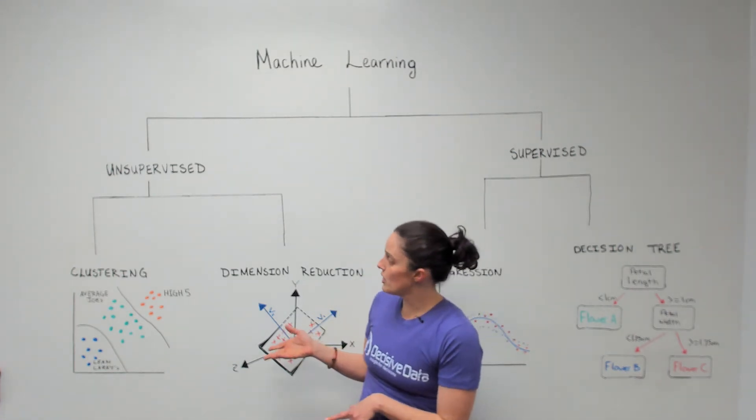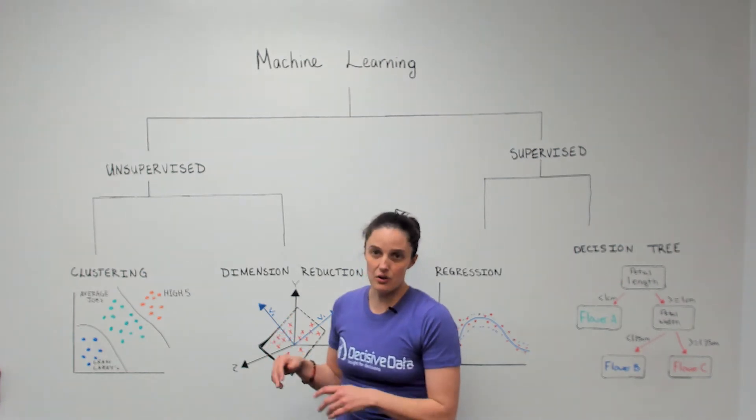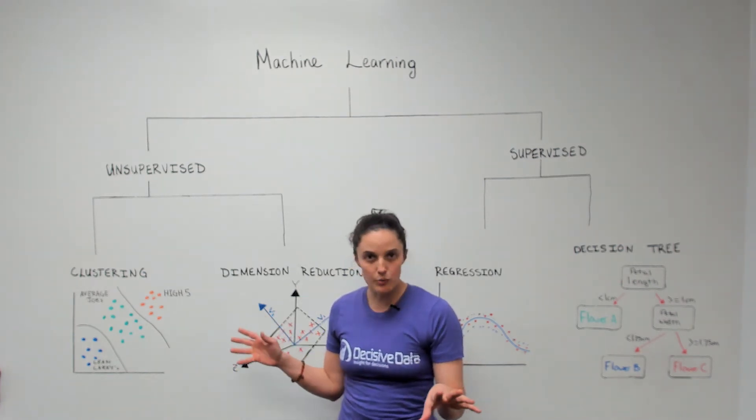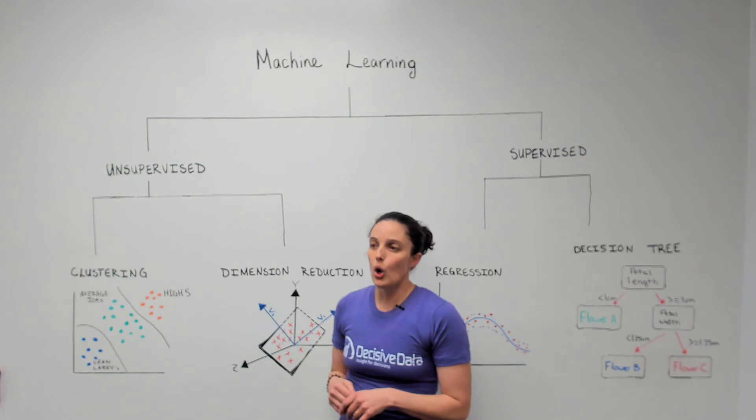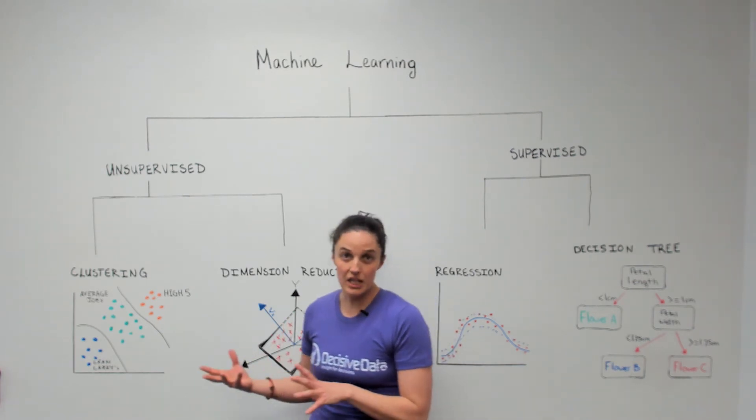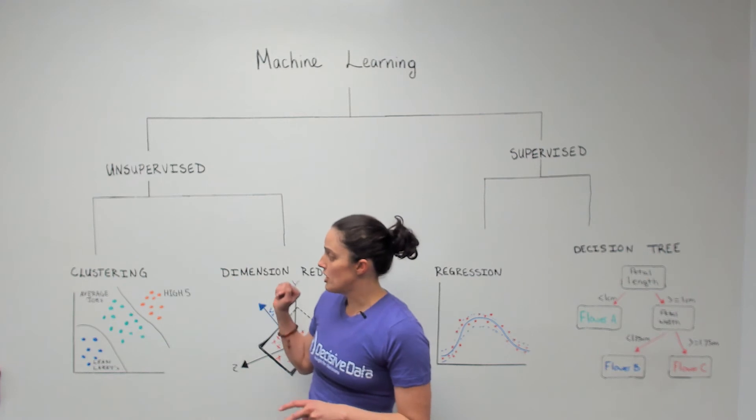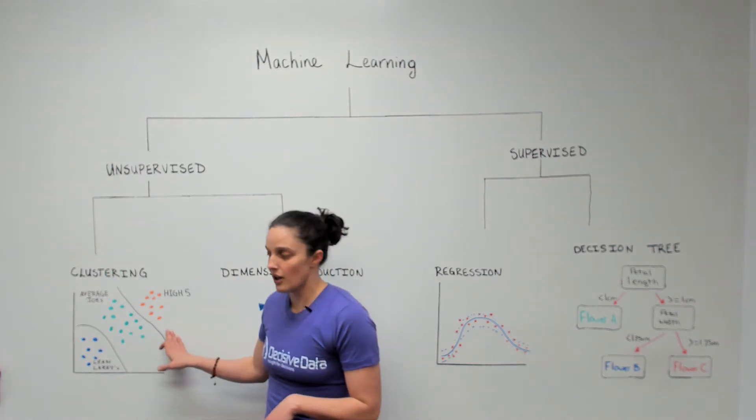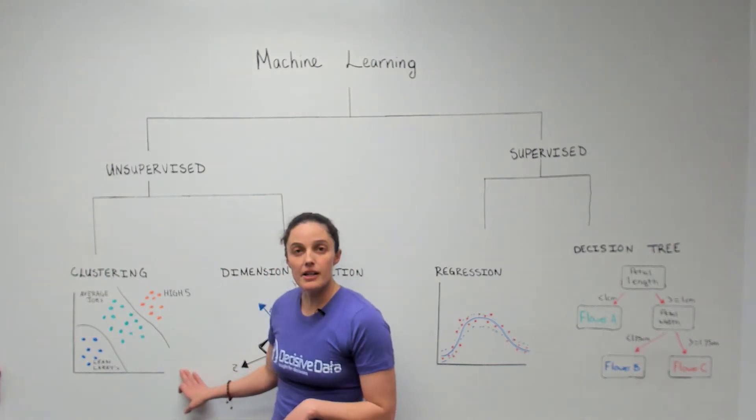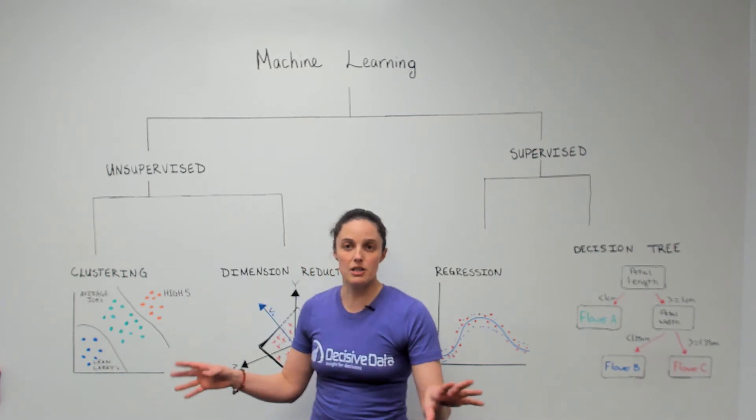So now let's go into unsupervised machine learning. To give a little bit of a recap, unsupervised means that it's unlabeled. We don't really know what we're dealing with. One good example of unsupervised machine learning is clustering. This is used a lot of times in marketing campaigns when we want to do customer segmentation.